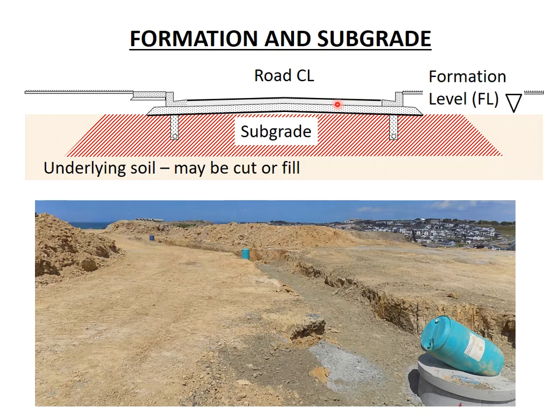Some soils are naturally strong and can support road loading; however, other soils may not be as strong and need to be strengthened. Subgrade strengthening methods such as geogrids and lime stabilisation will be looked at in later videos. Sometimes soils are just too weak or unsuitable to be a subgrade and need to be removed and replaced with stronger materials — a very expensive option and usually a last resort.